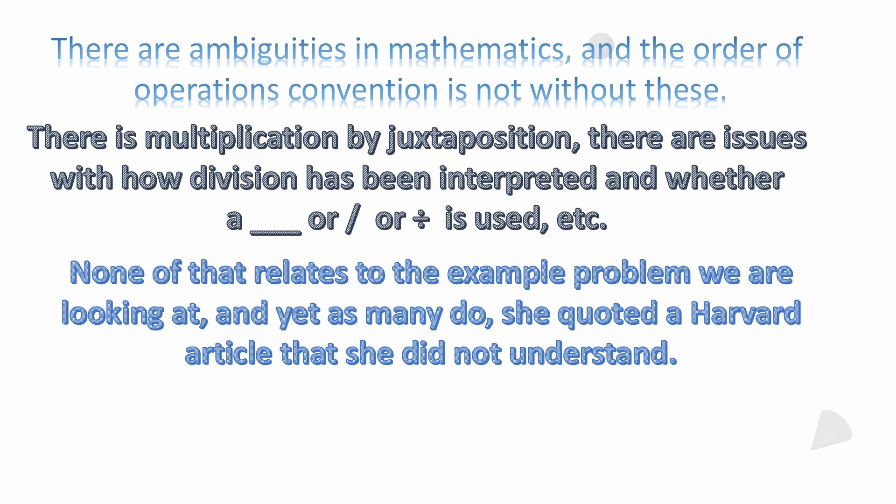There are ambiguities in mathematics and the order of operations convention is not free of those. For example, multiplication by juxtaposition — where you don't have a multiplication symbol and parentheses imply it — has a non-universal standard where multiplication outside parentheses may take priority over going left to right, conflicting with standard order of operations. But none of that stuff relates to the example problem we're looking at.